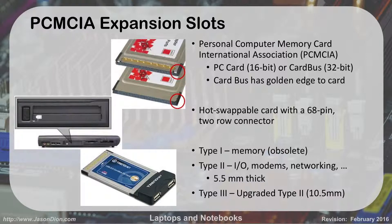PCMCIA cards are classified as Type 1, Type 2, or Type 3. Type 1 was used to upgrade memory — we don't do this anymore; it's from the 1980s. Type 2 was used for input/output devices like modems, networking, and USB, and they were 5.5 millimeters thick. Type 3 is double that at 10.5 millimeters thick and is an upgraded Type 2 giving more data transfer capability.